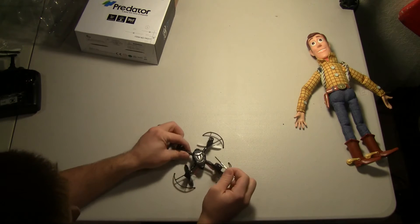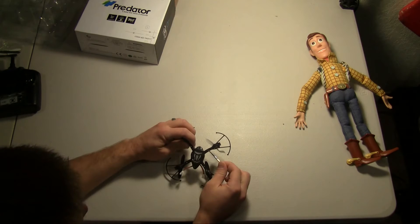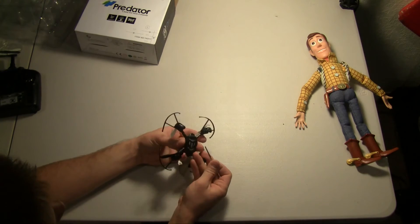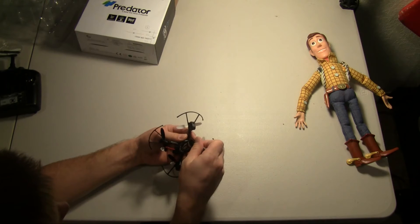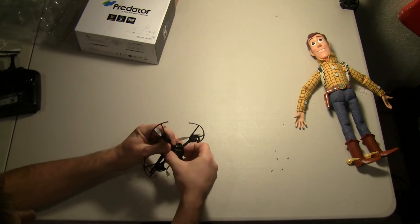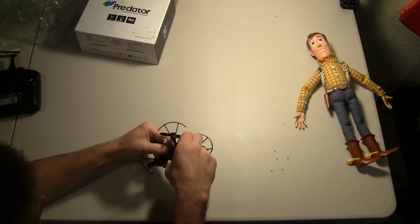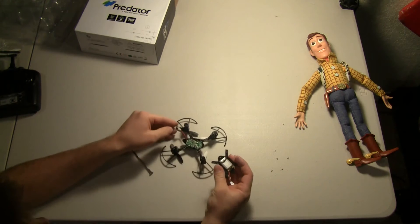First we're going to remove these seven screws: one, two, three, four, five, six, seven. We're basically going to take the bottom half apart. This bottom half just pops off with all the screws removed.